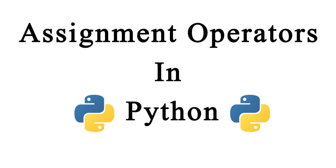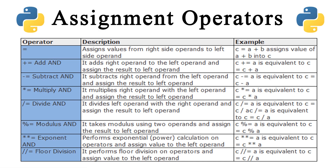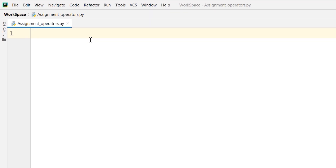There are eight types of assignment operators in Python: the equal, the plus-equal, the minus-equal, the multiply-equal, the divide-equal, the modulus-equal, the exponent-equal, and the floor division-equal. These are the eight types of assignment operators. Let us take some examples so that we can understand them better.